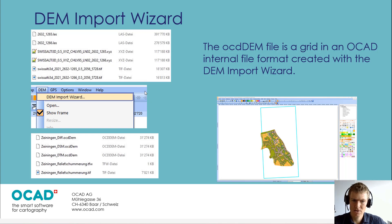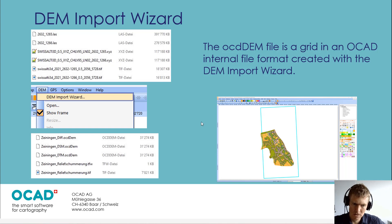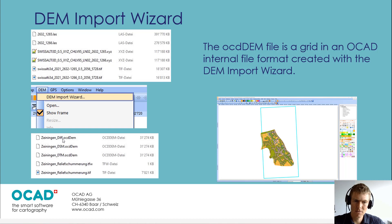Then OCAD creates an internal digital elevation model and saves it in an internal file format. When we talk about loading a digital elevation model in OCAD, we talk about loading this internal file into OCAD. With this file we can create the outputs as we have seen before — for example, a digital terrain model, or digital surface model, or the difference with which we can calculate the vegetation height.